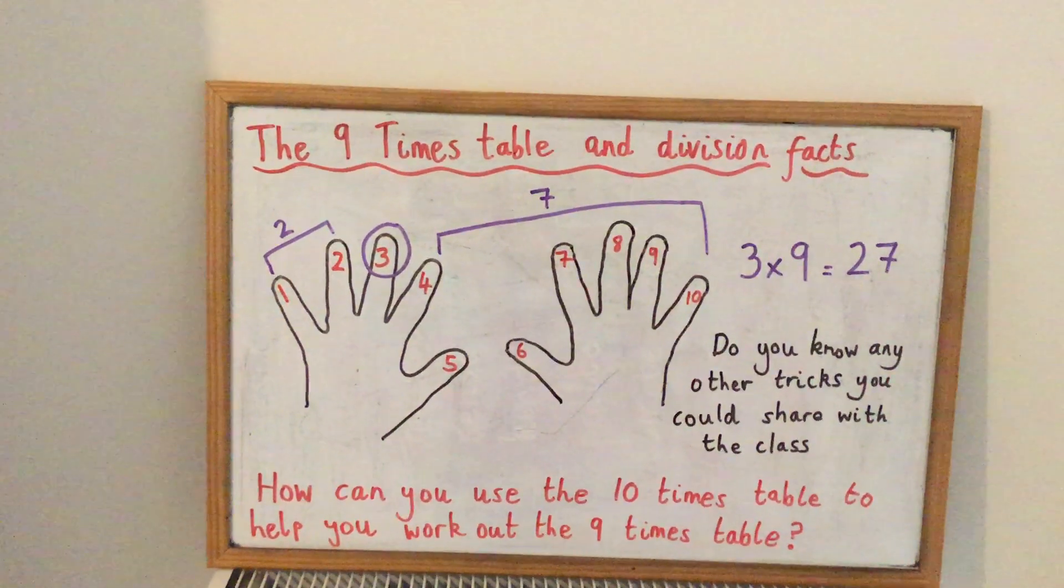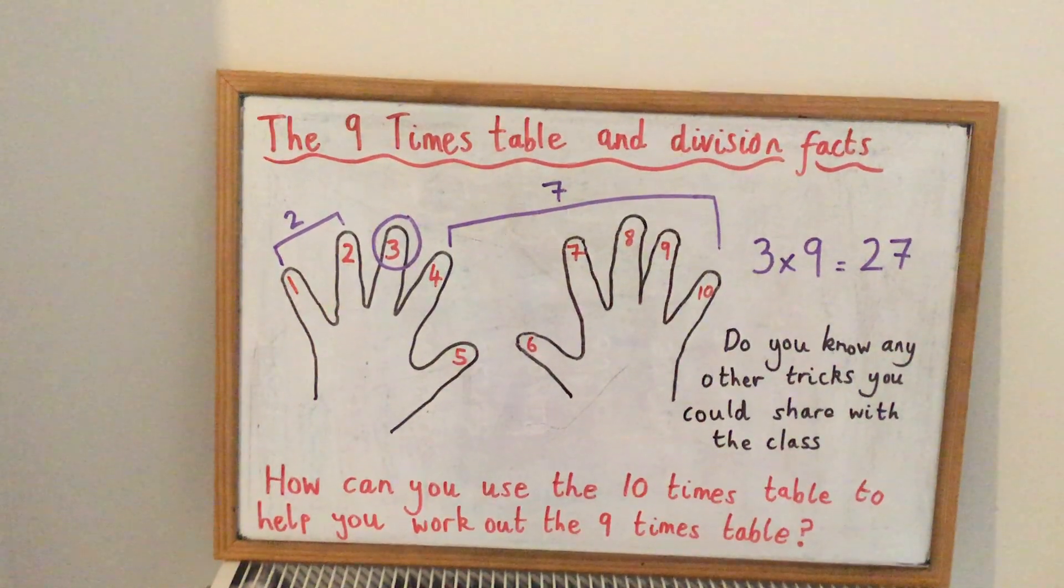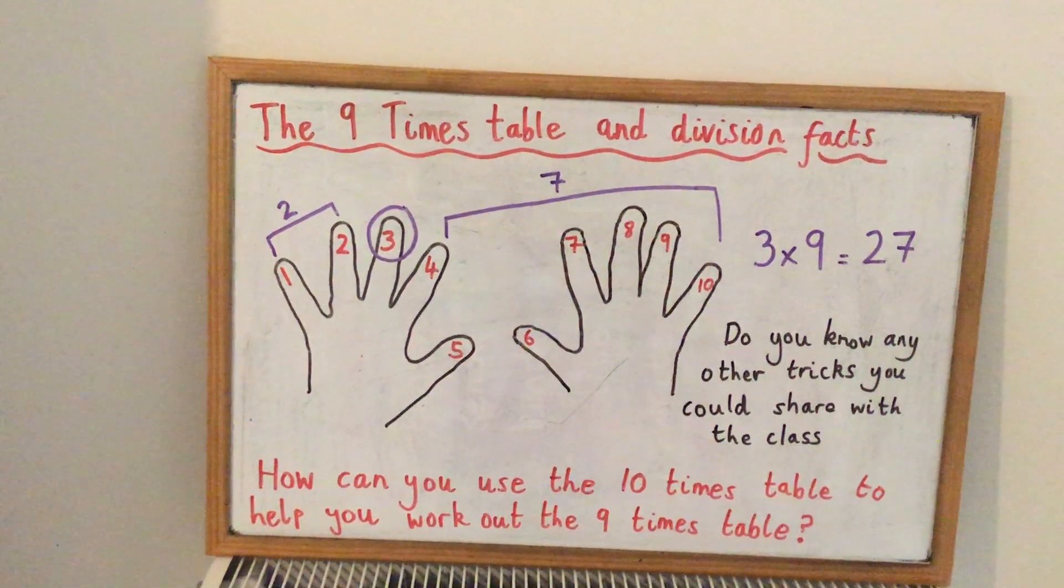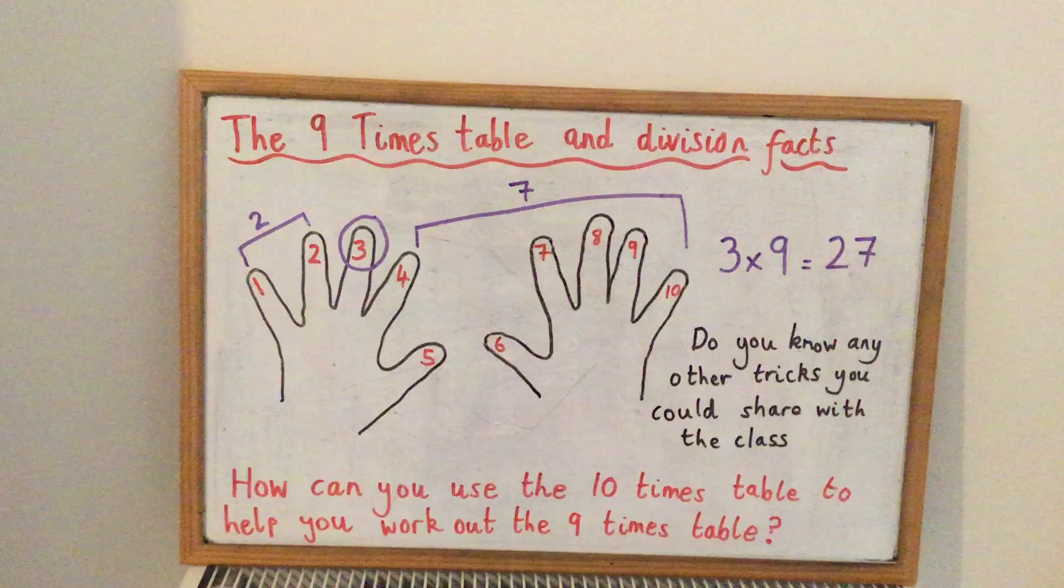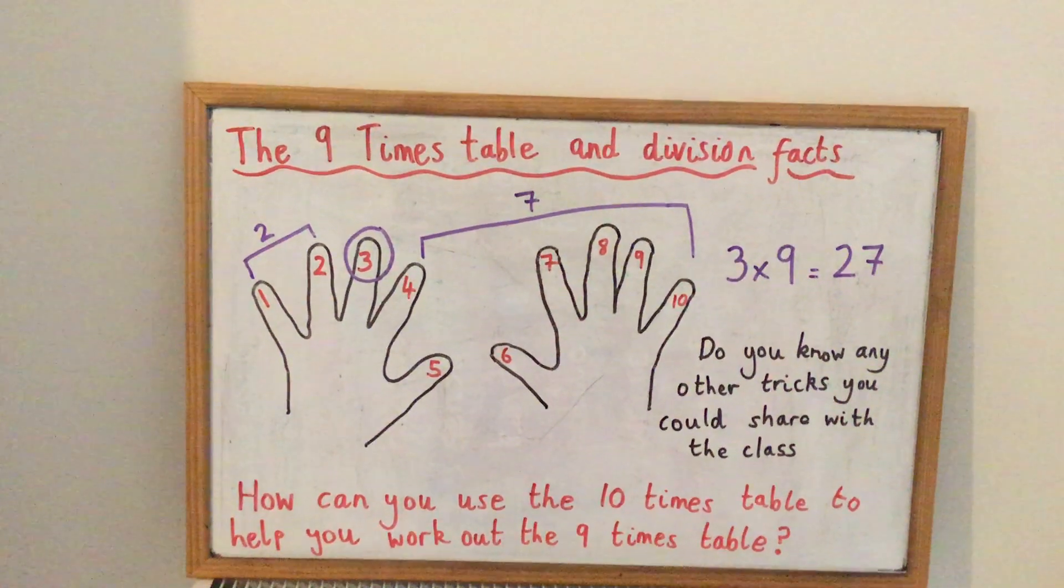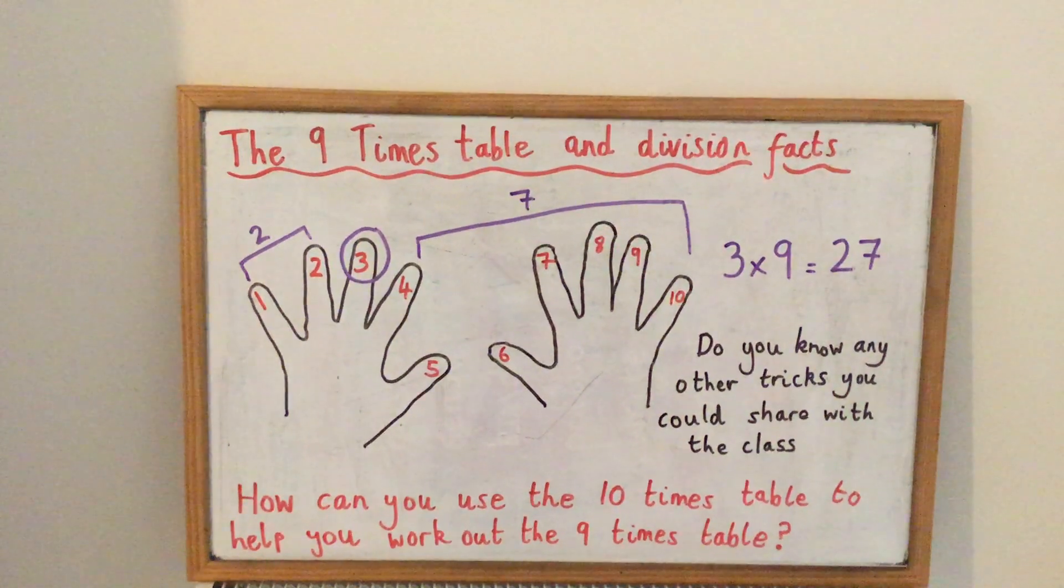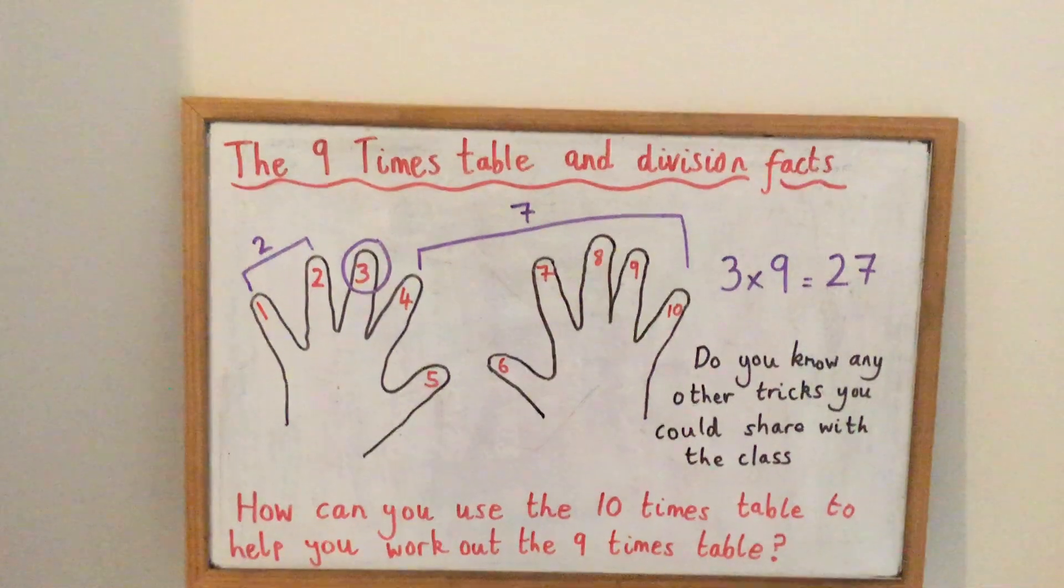So to the left hand side of that third finger, you should have two fingers raised. And to the right hand side of that third finger, you should have seven fingers still raised. Therefore, you've got your two and your seven, 27. Three times nine is 27.